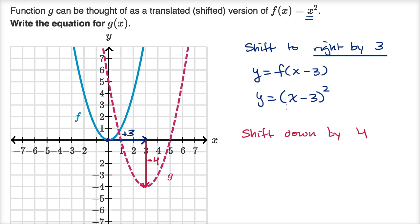Now when I first learned this, this was counterintuitive. I'm shifting to the right by three, the x coordinate of my vertex is increasing by three, but I'm replacing x with x minus three. Why does this make sense?